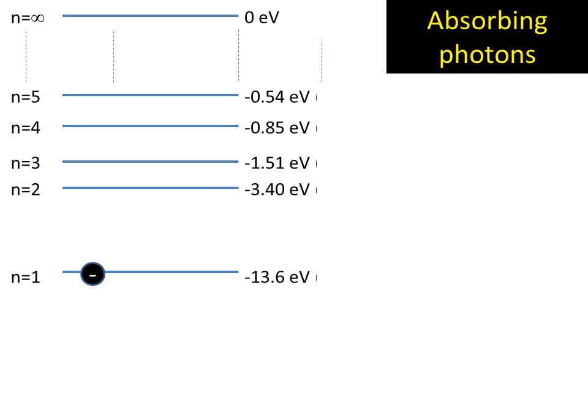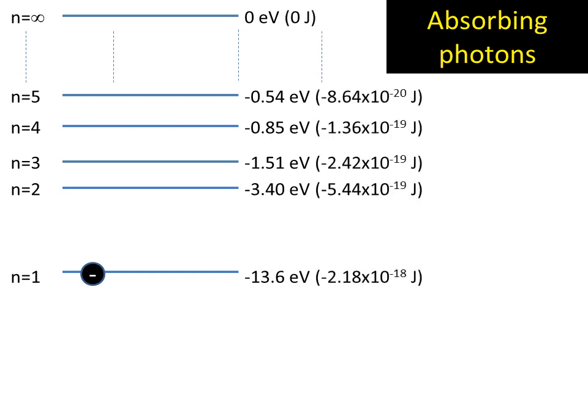We can see here that it's got minus 13.6 electron volts. I said earlier that this is at its lowest energy point. And what this tells me is to get this electron all the way to the ionization point, n equals infinity, I need to give it at least 13.6 electron volts of energy. Let's have a quick look at what that corresponds to in joules. I've converted the electron volts into joules by simply multiplying by 1.6 times 10 to minus 19.